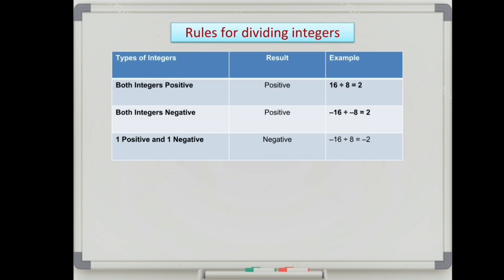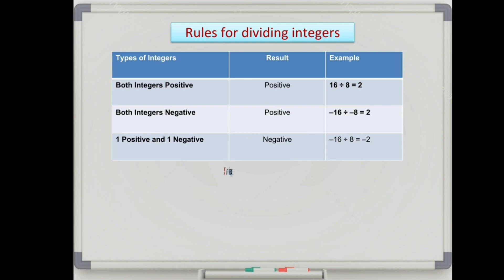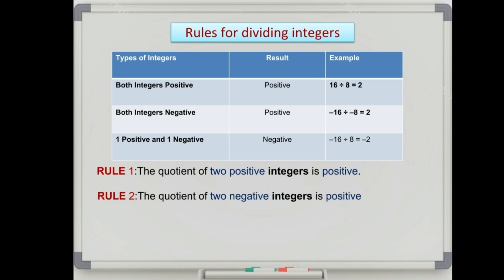Rules for dividing integers: if both integers are positive, the result will be positive. If both integers are negative, the result will also be positive. If one is positive and one is negative, the result will be negative. In other words, the quotient of two positive integers is positive, the quotient of two negative integers is also positive, and the quotient of a positive and a negative integer is negative.